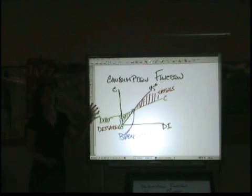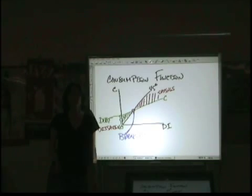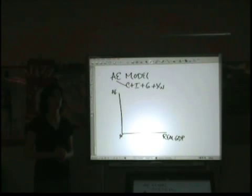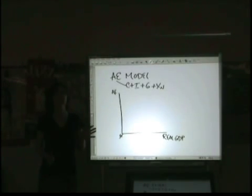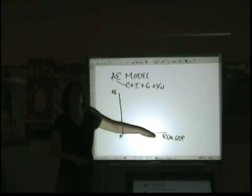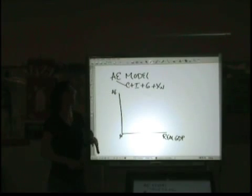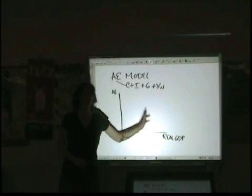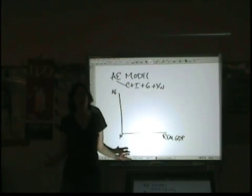The way we get from the consumption function to the aggregate expenditures function is just that we take C and we add the other GDP components to it. Building on the consumption function, another graph you want to understand is aggregate expenditures. Just like with the consumption function, we're going to have aggregate expenditures — which is all of the spending for the economy using those components of your GDP equation — on the vertical axis, and real GDP on the bottom. If you think of it this way: national expenditures and national income versus your spending and your disposable income — it's really the same thing on a much bigger scale.